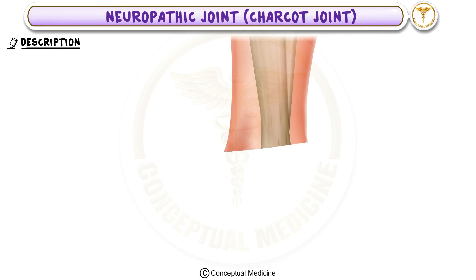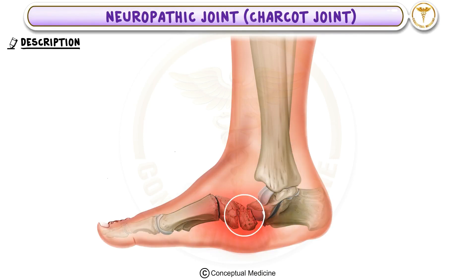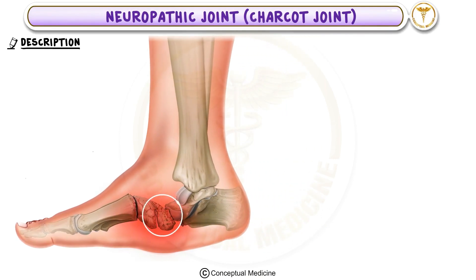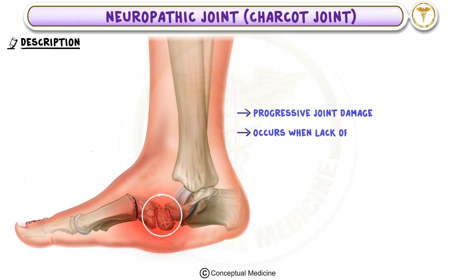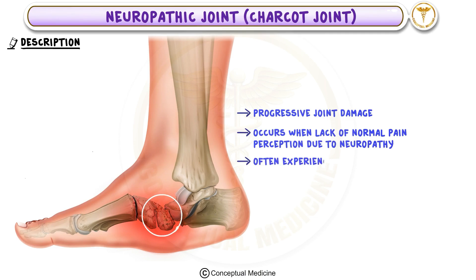Charcot Joint is a form of progressive joint damage that occurs in individuals who lack normal pain perception due to neuropathy. Despite the severe destruction, patients often experience little to no pain, which makes this condition unique.